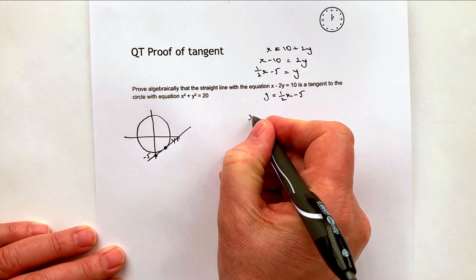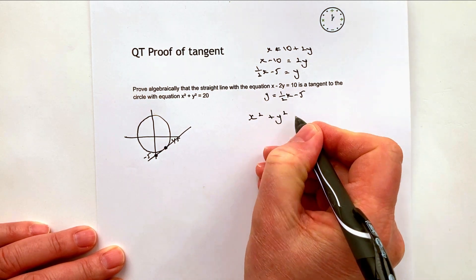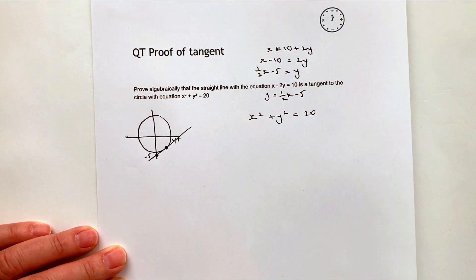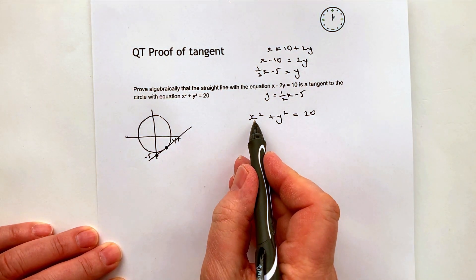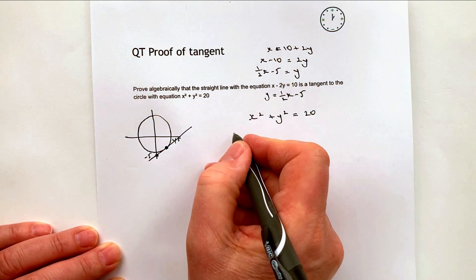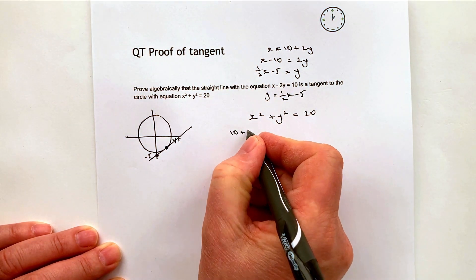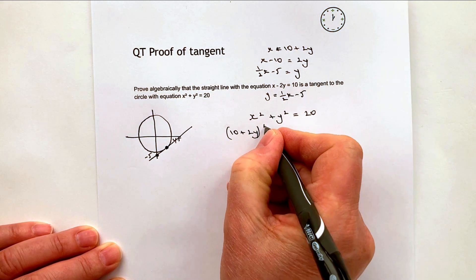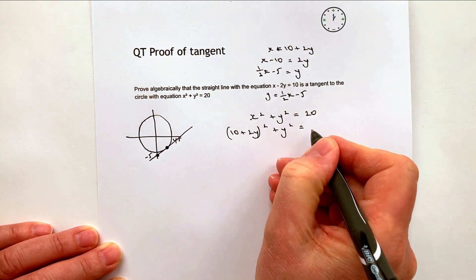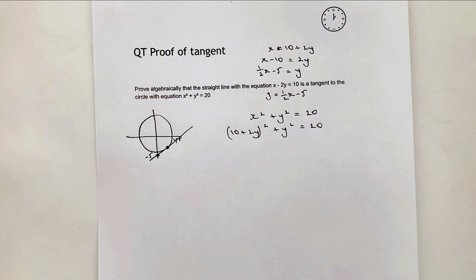Rather than writing our equation as x squared plus y squared equals 20, I'm going to write this as (10 plus 2y) squared plus y squared equals 20. So it's very similar to solving simultaneous equations by substitution.